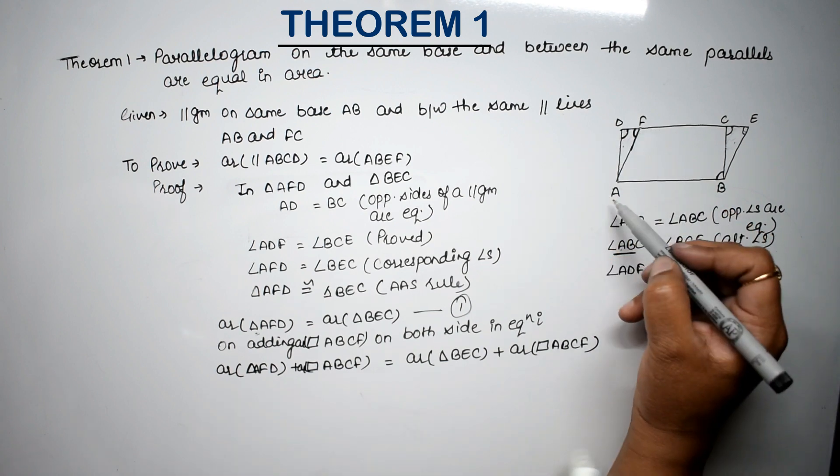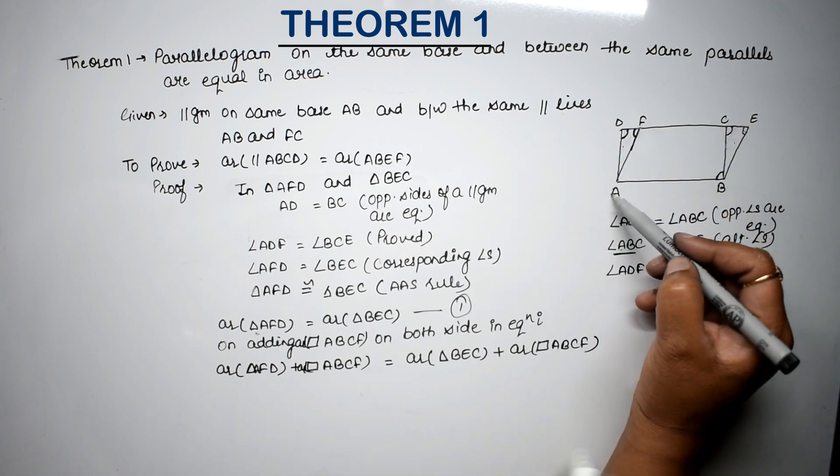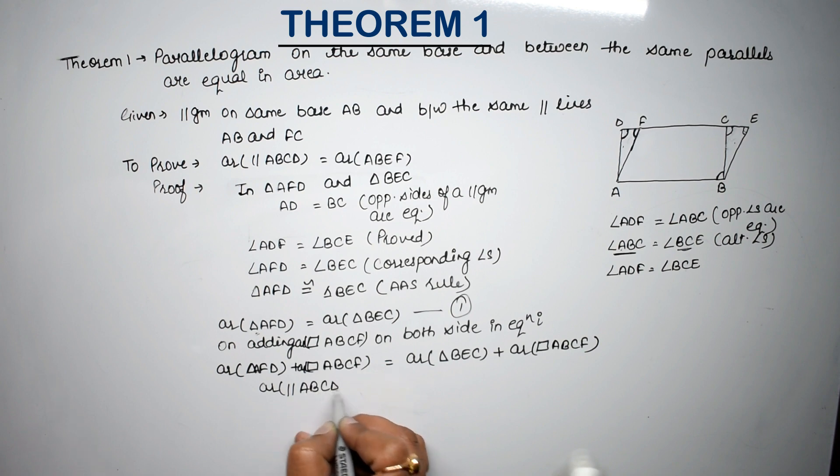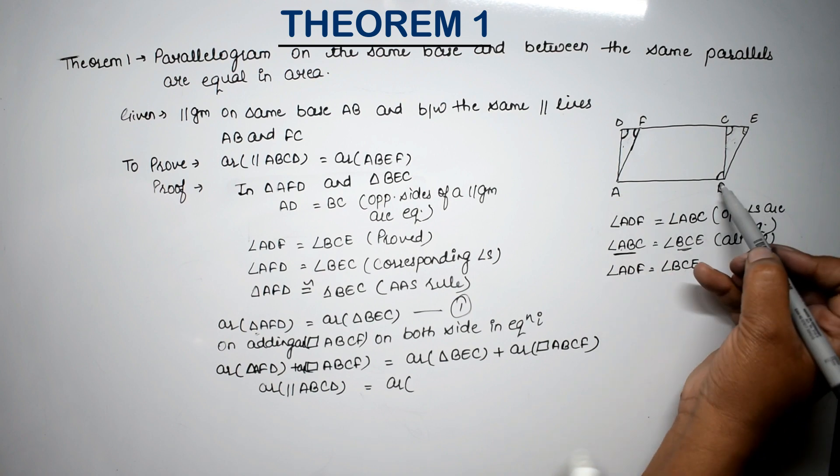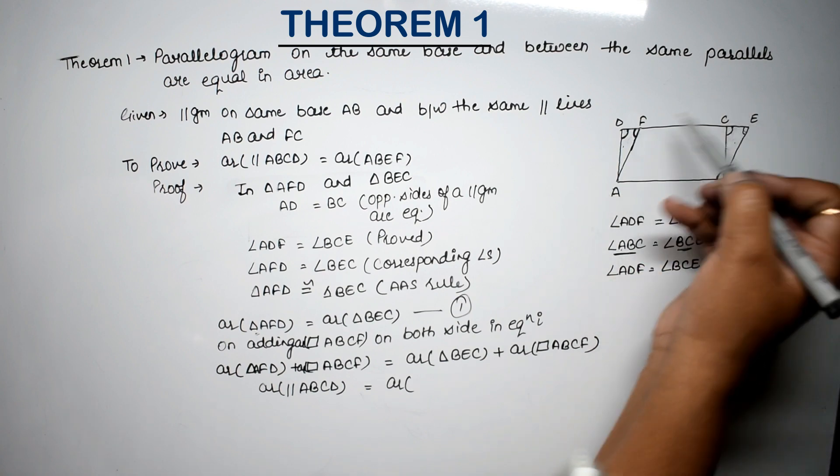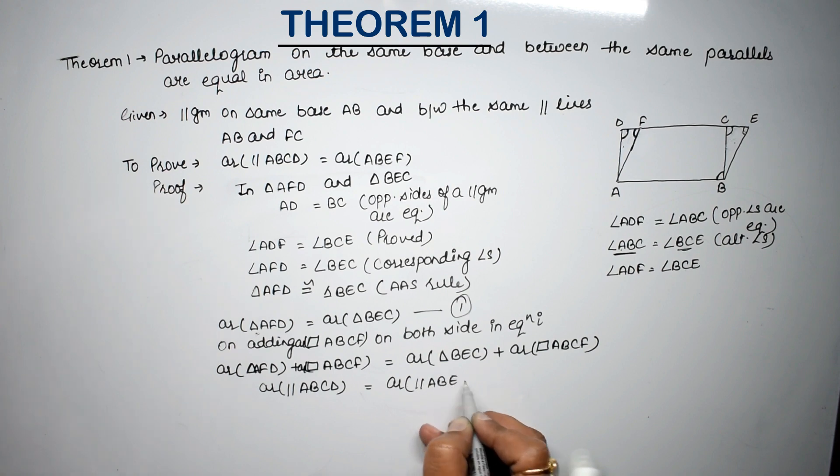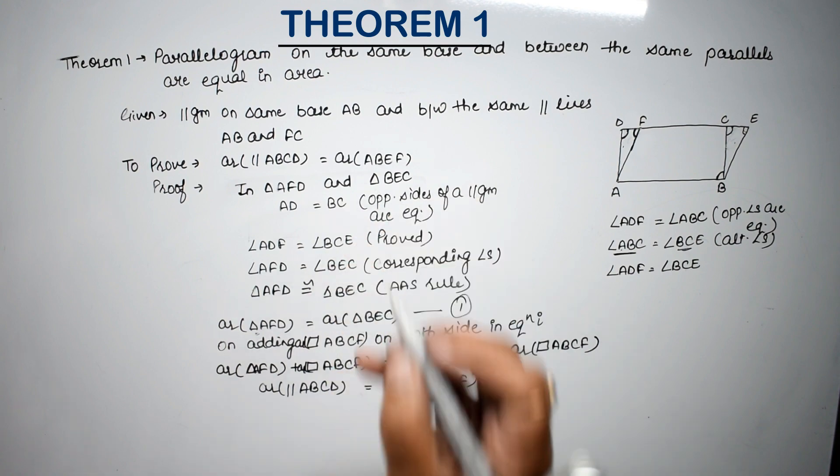Now see, AFD plus ABCF added. So what does this become? ABCD. Area of parallelogram ABCD. Equals to area of, now BEC plus ABCF added. So this also becomes a parallelogram. Which one? ABEF. And both areas are equal. Means, proved.